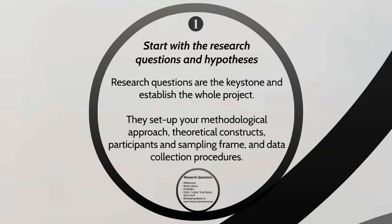You at least have the constructs nailed down, and then the question is how do you measure these things and what kind of literature is out there? When you think about elementary school age children, think about behaviors that are not pro-social, like the bullying literature. Just stick with this point for a moment — you want to start with clear questions.